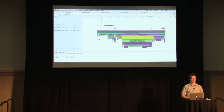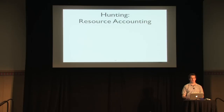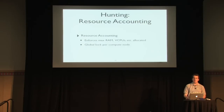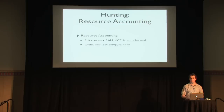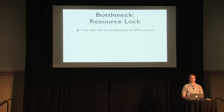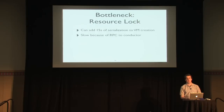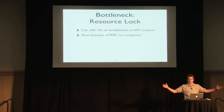So what is this compute resources lock? Nova compute resource accounting keeps track of how much RAM, how many vCPUs, etc., this compute node is using — used to enforce quotas and provide statistics on the dashboard. These statistics are maintained with a global lock so that two VMs being created simultaneously don't increment counters racially. The problem is this lock is adding about 15 seconds of serialization to creating virtual machines.